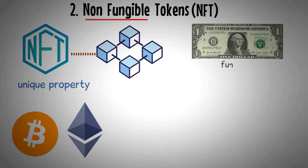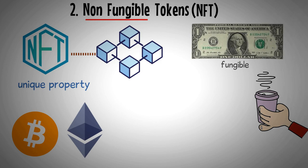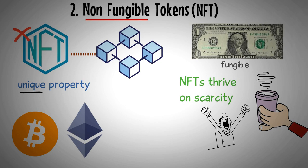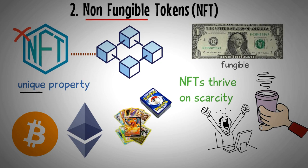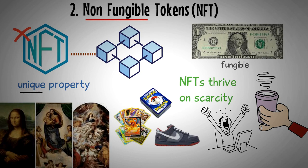You can exchange a fungible asset for another asset of equal value. A dollar bill is fungible, so you can trade it for another dollar bill or buy a cup of coffee worth a dollar. But you cannot exchange an NFT and get a similar NFT in return. Each NFT is a unique blockchain item, complete with its digital signature. NFTs thrive on scarcity like one-of-a-kind Pokemon cards, original Renaissance-era paintings, or limited edition Nike sneakers.